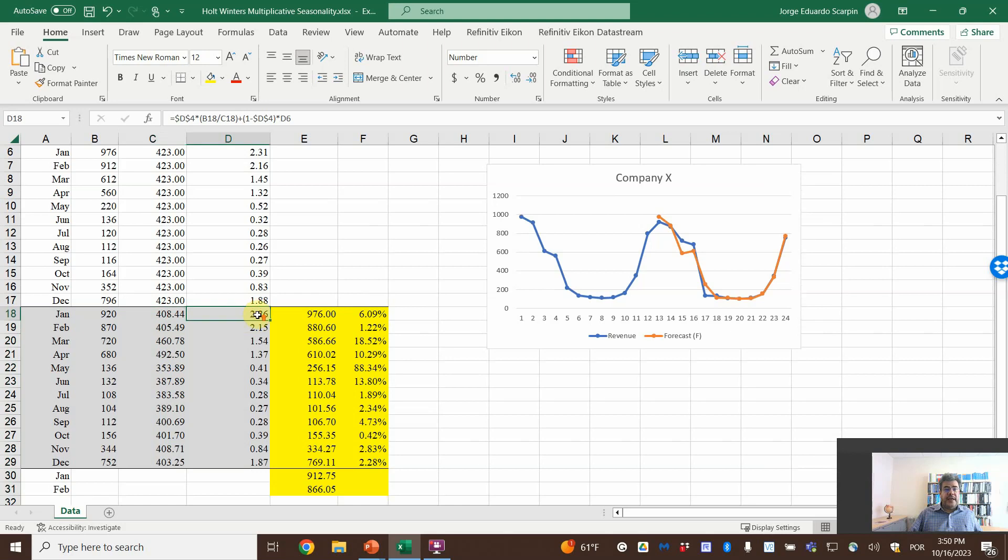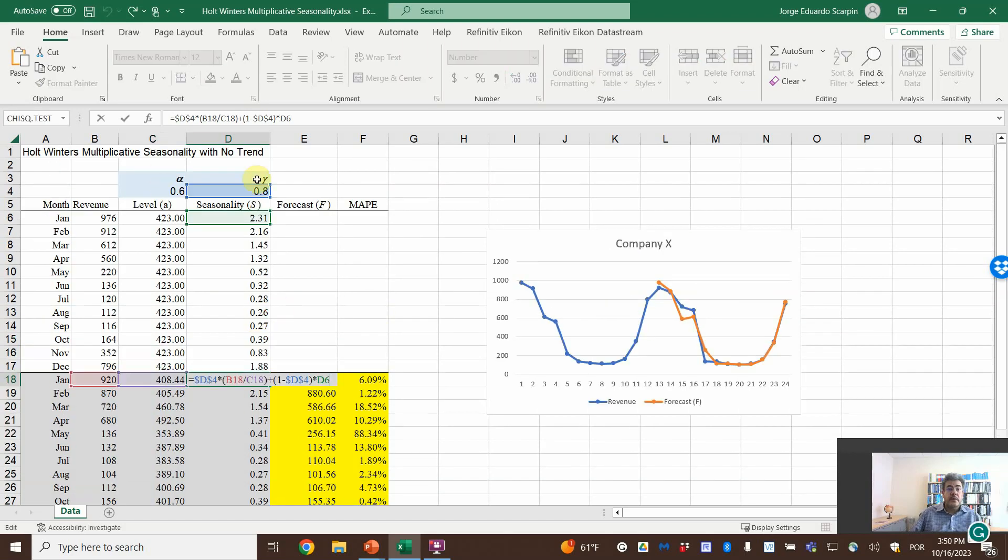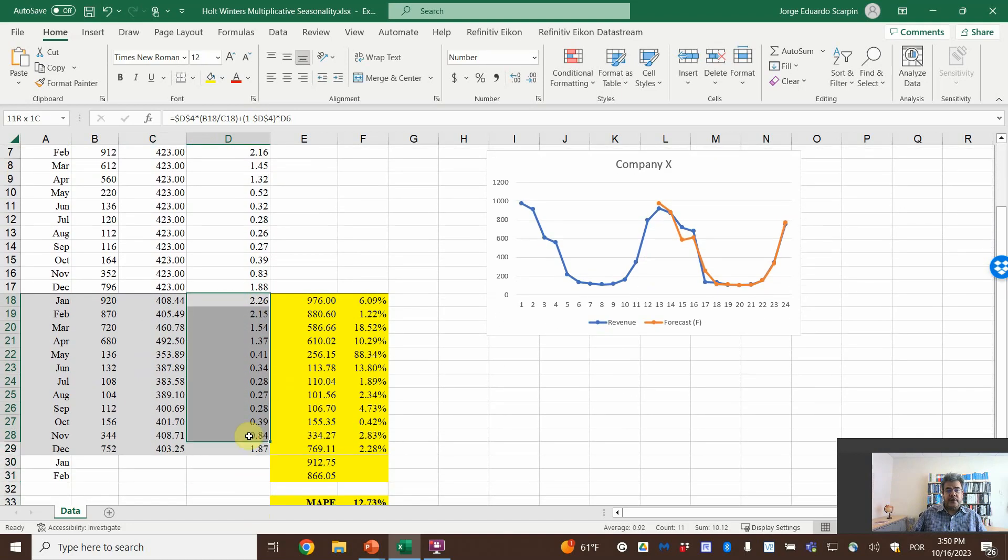For the seasonality, epsilon multiplied by actual number divided by At, plus one minus epsilon multiplied by the seasonality. And then we have these numbers for St.